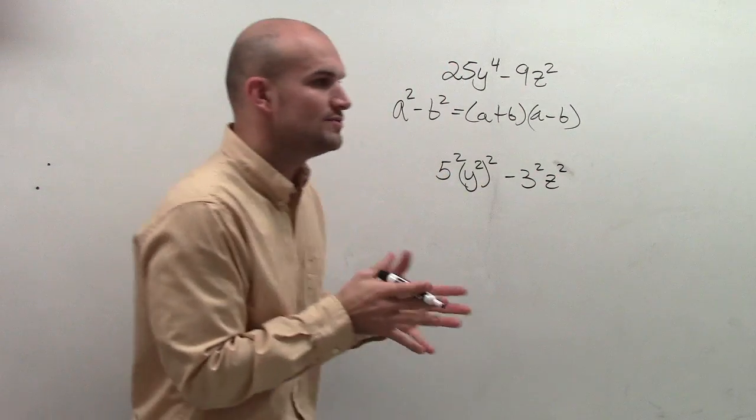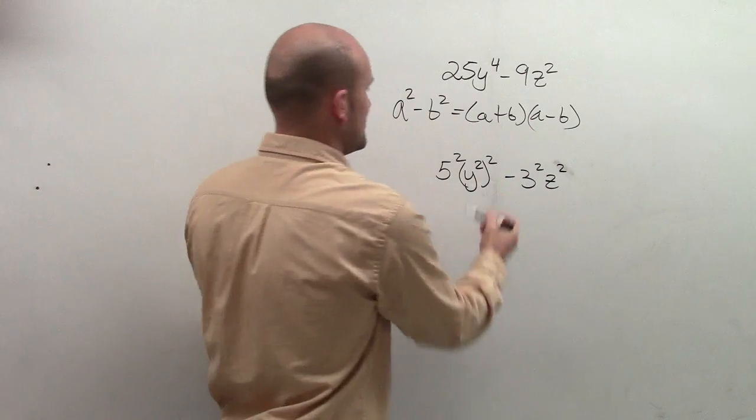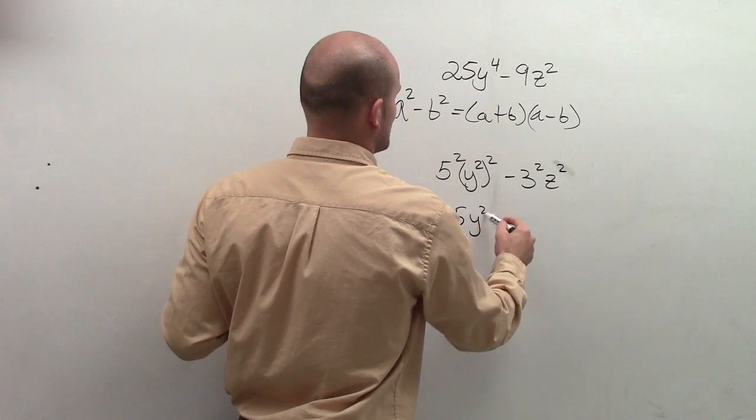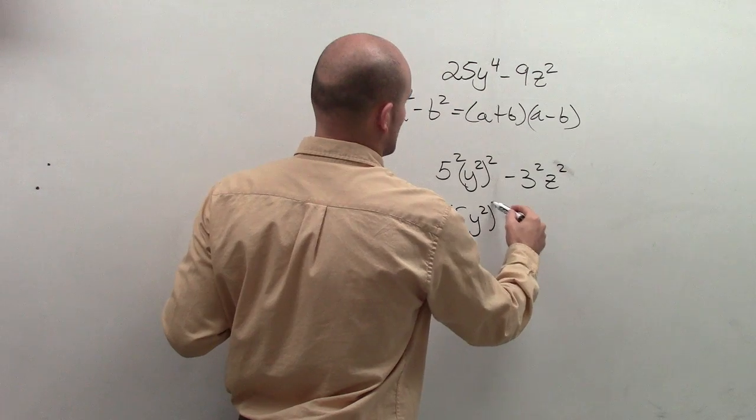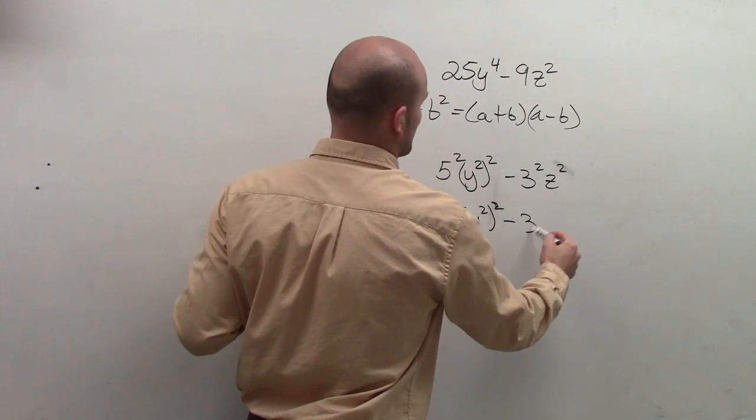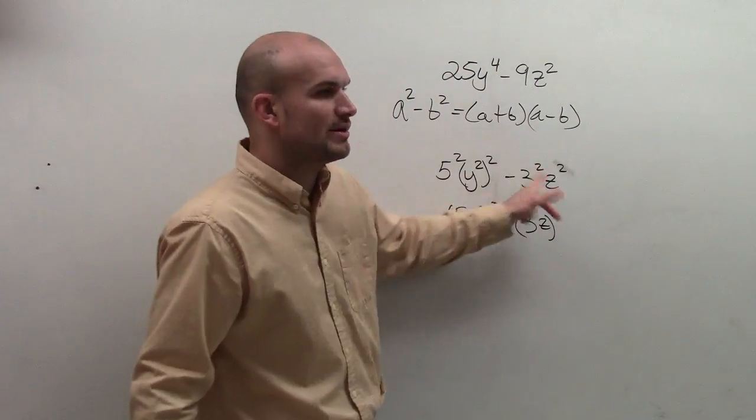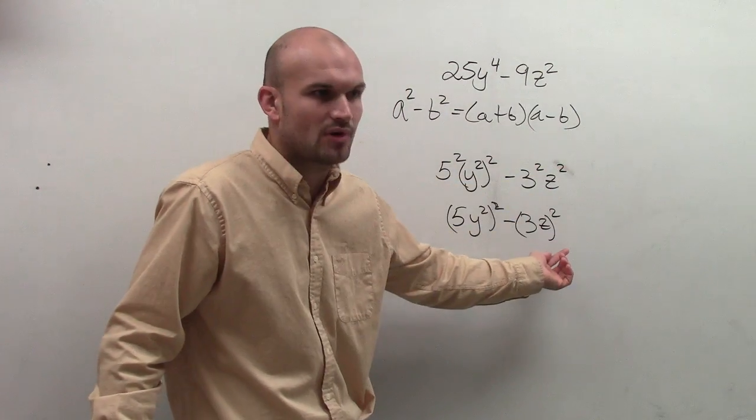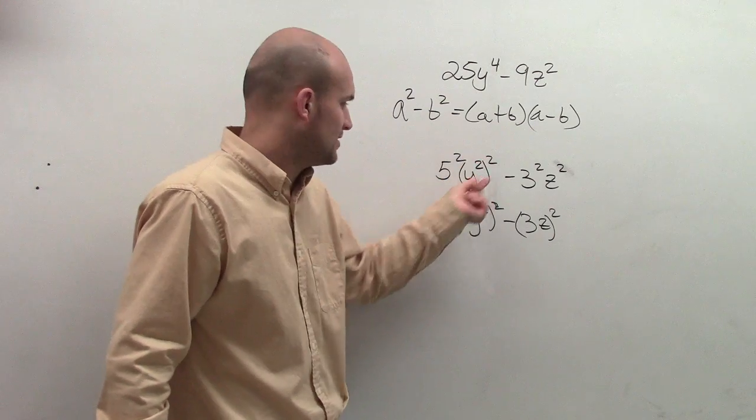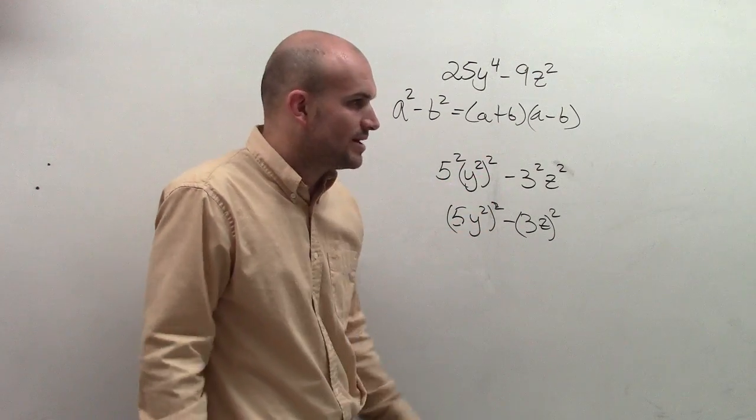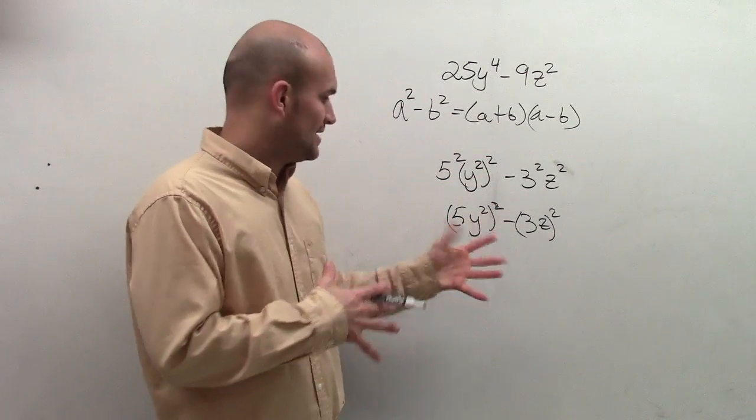So what I'm going to do now is I can rewrite these together as a squared number. So I can write this as 5y squared quantity squared minus 3z quantity squared. Because since you're squaring both of them you can just write them as that product squared. Since I'm squaring both of these I can rewrite this as a product squared.